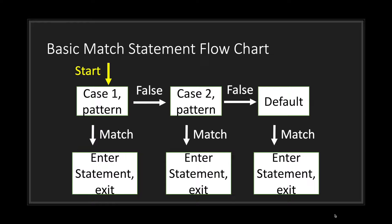Let's take a look at a basic match statement flowchart. When we start the match statement we take the value and look at the patterns. In case one, we check the pattern — if it matches we enter the block statement and exit. If not, we move to the next pattern. If that also doesn't match, we either exit or enter the default underscore block and then exit.